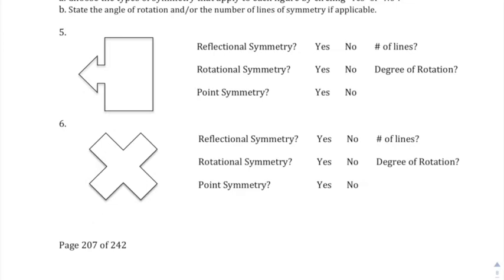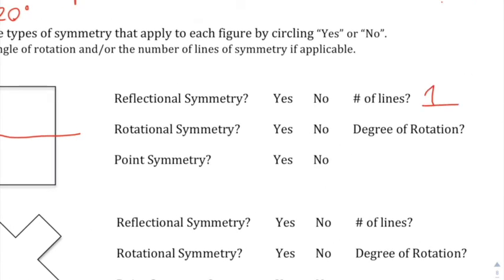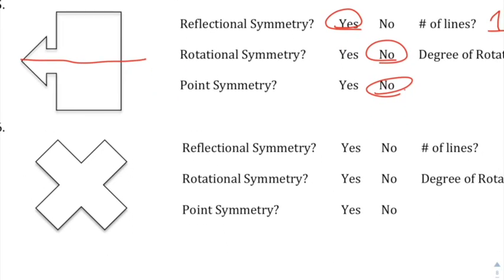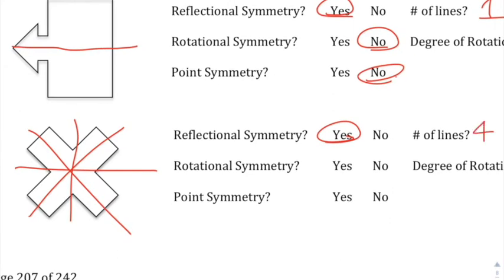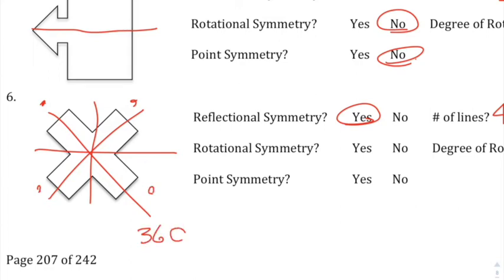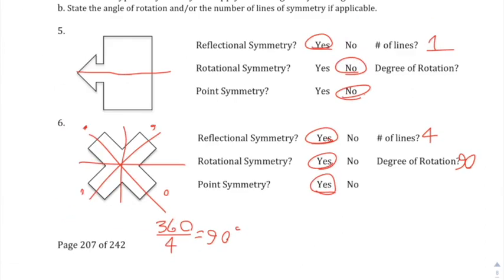More symmetry problems: for a figure with one line of symmetry — yes, reflectional symmetry with one line. No rotational symmetry, since the only way is a full 360 and we do less than 180. No point symmetry either, since if there's no rotational symmetry there's automatically no point symmetry. For an X-shaped figure: four lines of symmetry. Rotational symmetry is 360 divided by 4 equals 90 degrees. Adding 90 twice reaches 180, so it does have point symmetry.